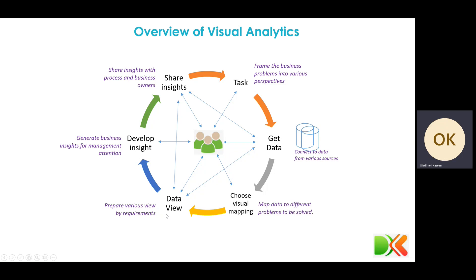After being mapped to various questions or various problems to be solved, then the data will be viewed. Now, the data is viewed by people that have the right to look at them. And we are able to see insights have been discovered. That insight is shared with business process owners, either business process owners or business executives. That is the flow of data within the visual analytic terrain.